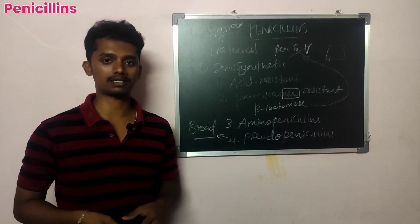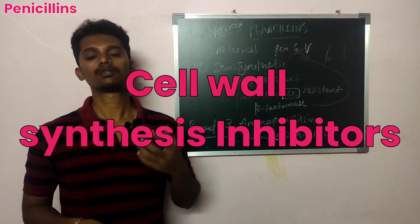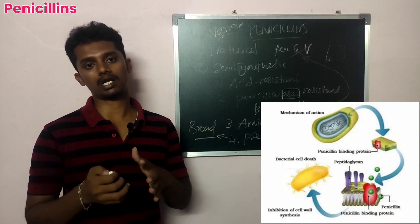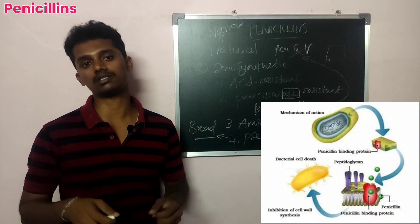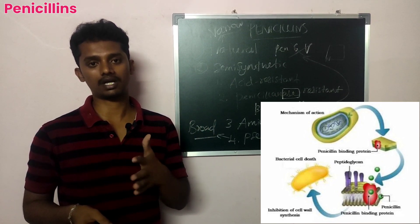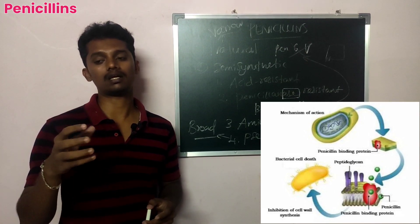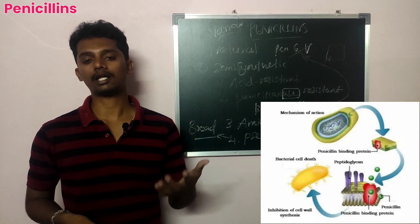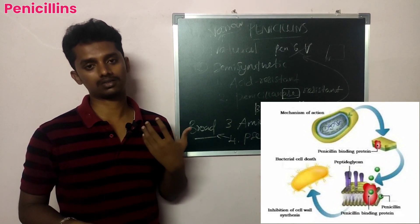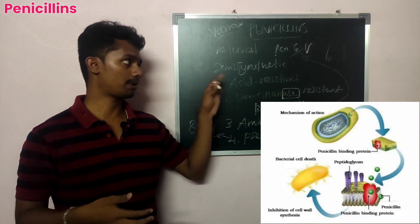Regarding pharmacological actions and mechanism of action: these drugs inhibit bacterial cell wall synthesis. The bacterial cell wall cross-linking is inhibited, making the cell wall deficient. The bacteria cannot survive without a proper cell wall, which eventually leads to their death.